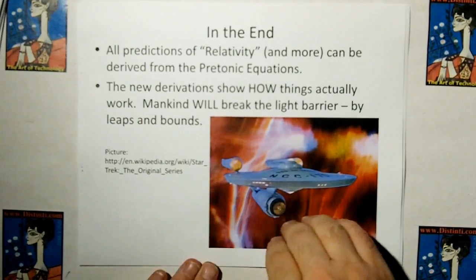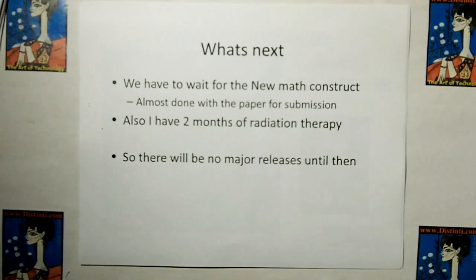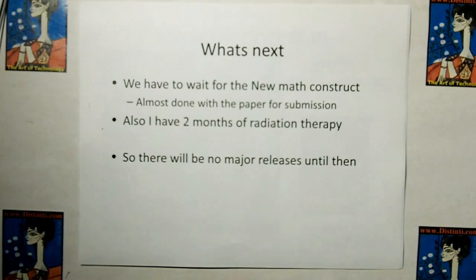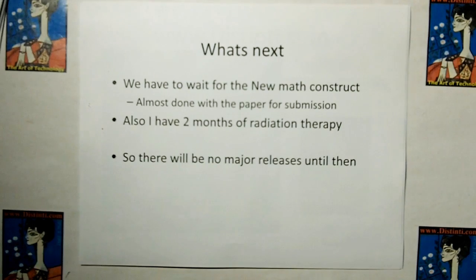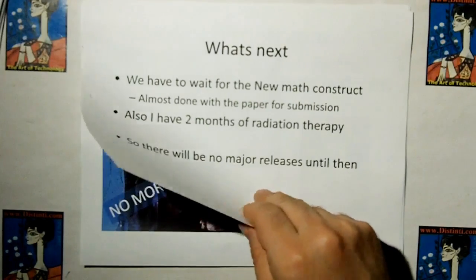I've got this picture from Wikipedia. So what's next? We have to wait for the new math construct to come through — that's at least two months. I'm almost done with the paper for submission. Also, I have two months of radiation therapy because I have cancer, so I'm not going to be very active on the video front. Maybe I'll answer some comments. There will be no major releases until the new math construct comes out — maybe one other Distinti World video.